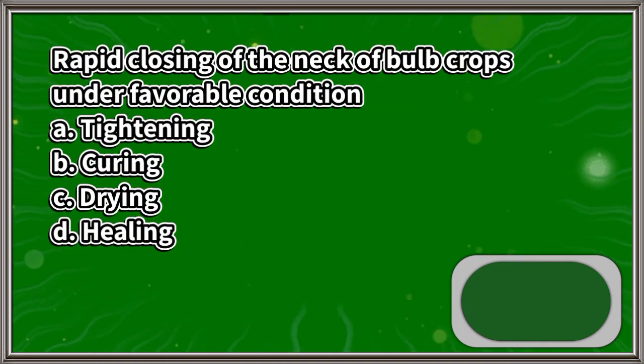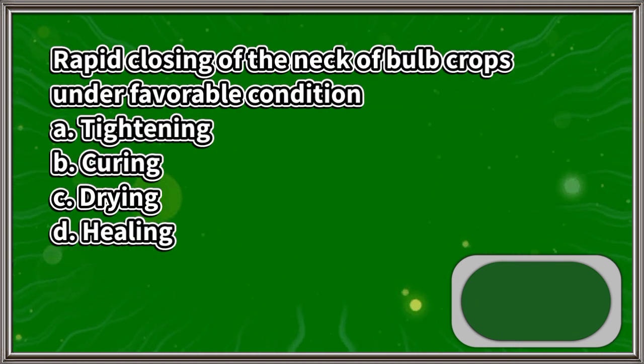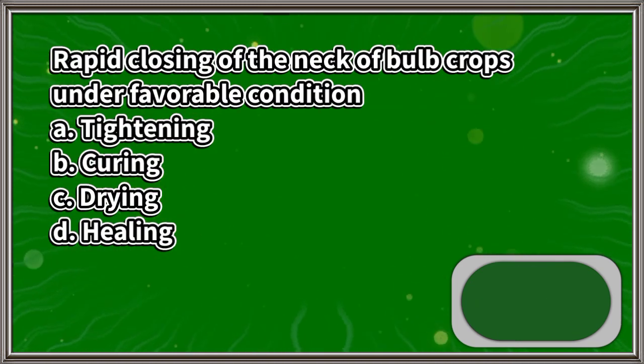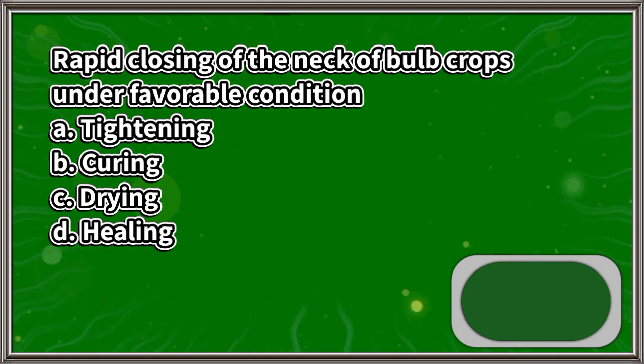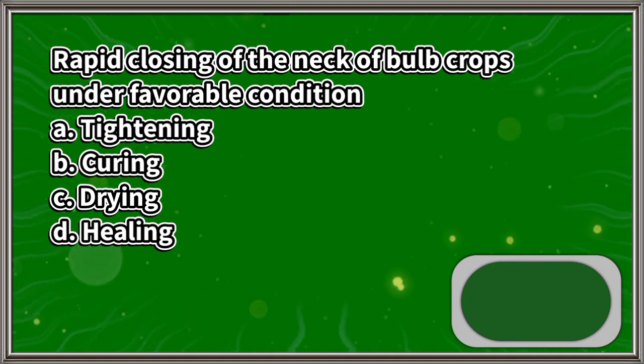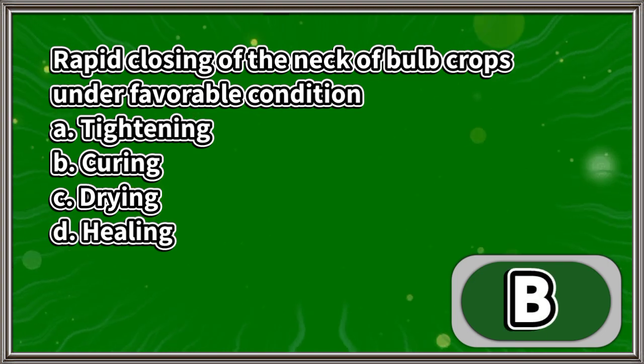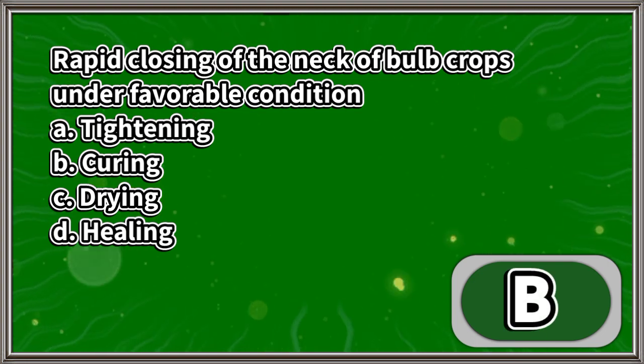Rapid closing of the neck of bulb crops under favorable condition: A. Tightening, B. Curing, C. Drying, D. Healing. The answer is letter B.